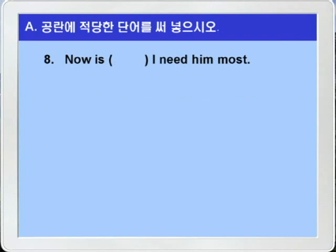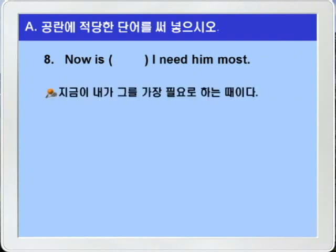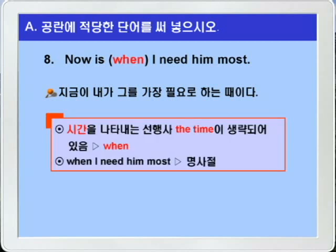8번입니다. 해석을 해보죠. 지금이 내가 그를 가장 필요로 하는 때이다, 이런 의미겠죠. 따라서 관계부사 when이 정답이 되겠습니다. 여기 now는 명사이고 is 다음에 때를 나타내는 선행사 the time이 생략되어 있는 것입니다. 따라서 'when I need him most'는 형용사절이 아니라 동사 is의 주격보어가 되는 명사절이 되겠습니다.